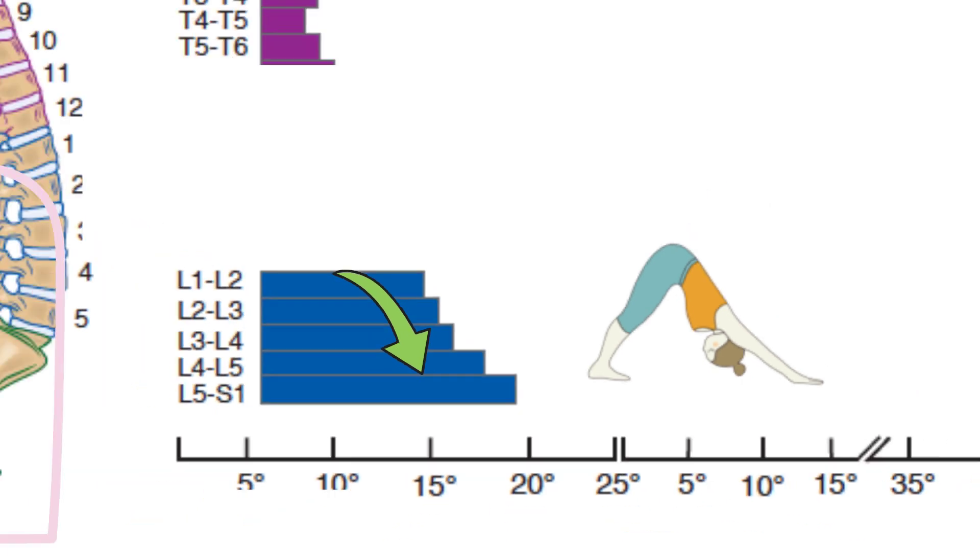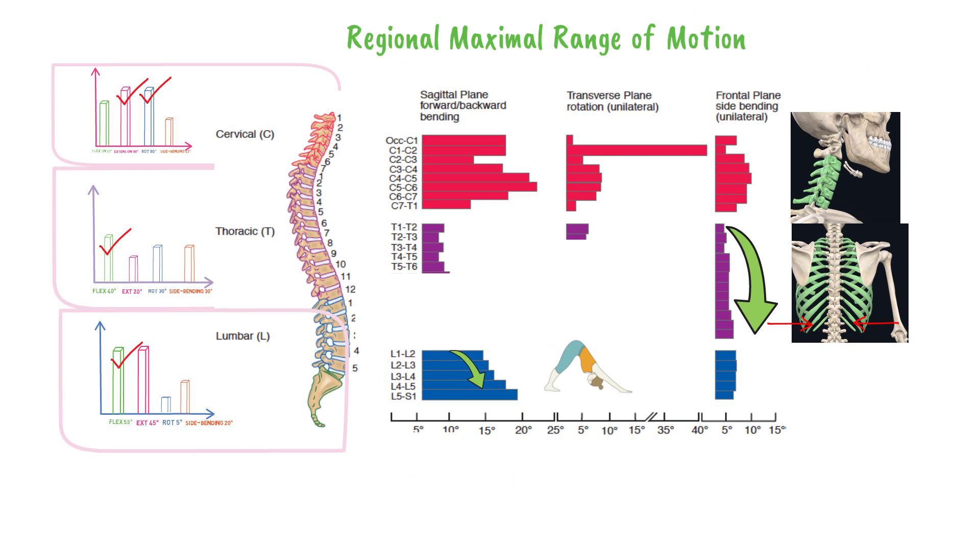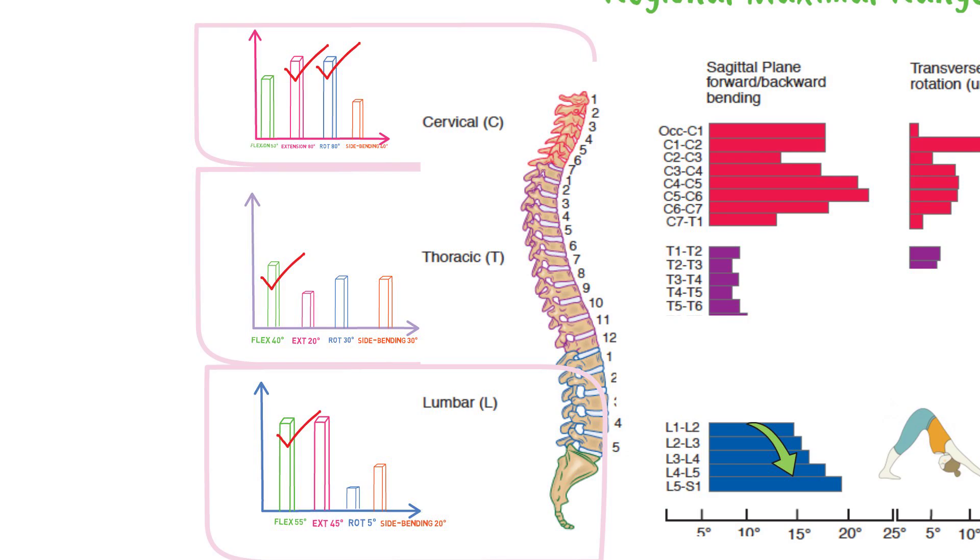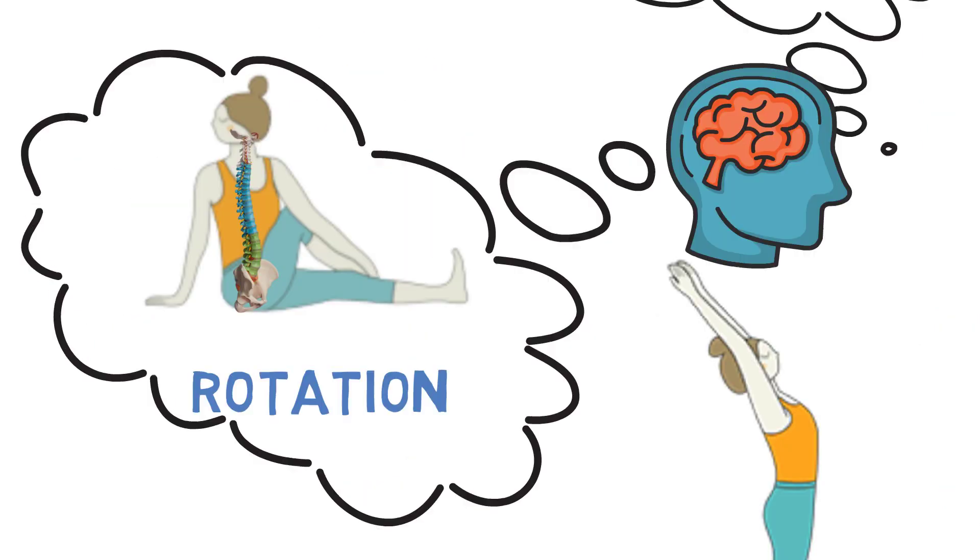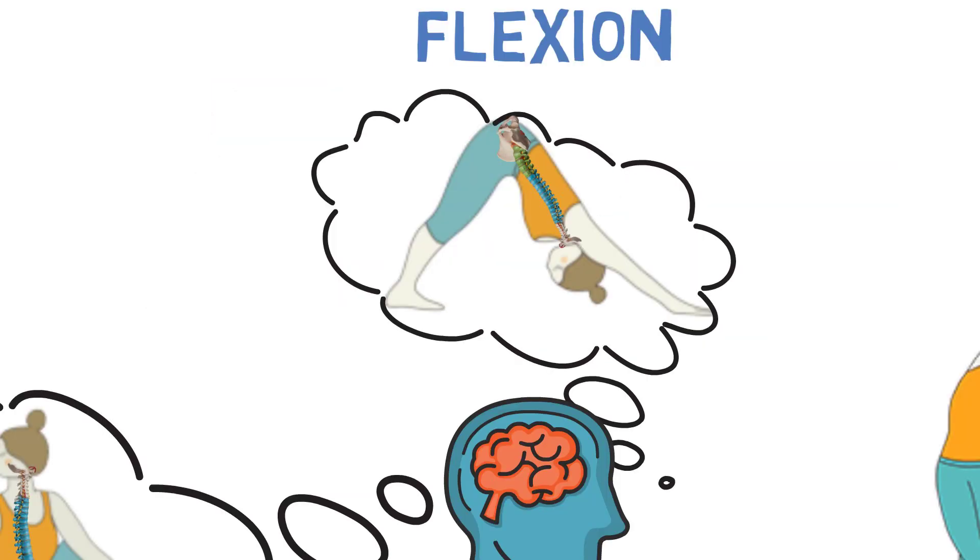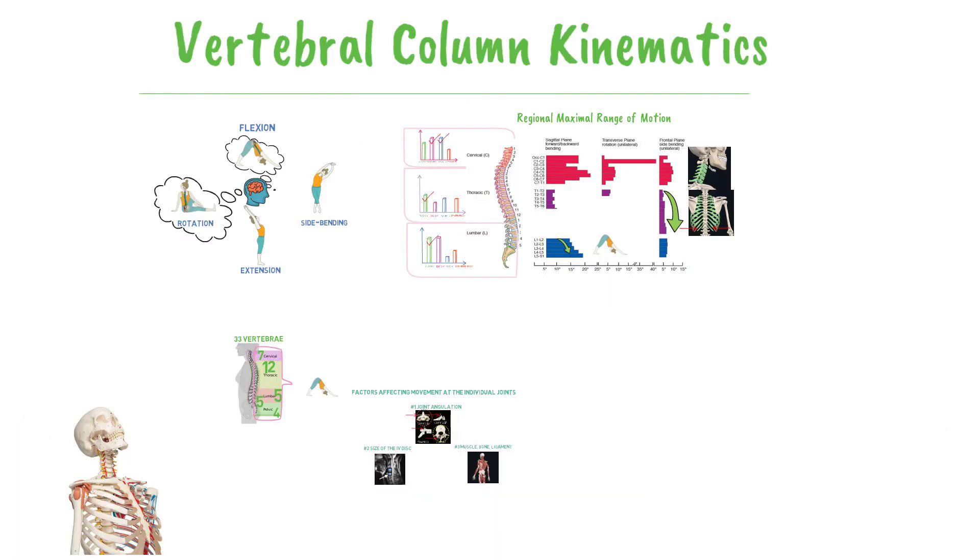Now you know which part of the spine possesses most range of motion in each of the cardinal planes. Now that you've learned these concepts, there are a million ways to apply it. Whether you're a physical therapist looking to find the hypermobile or irritable areas in your patients, or you're a dancer looking to increase the mobility of your spine. Now you know the anatomical architecture and the biomechanical principles that guide the movement.